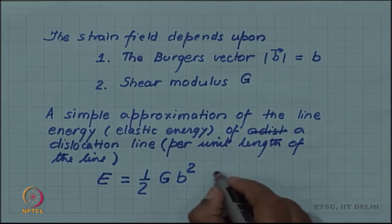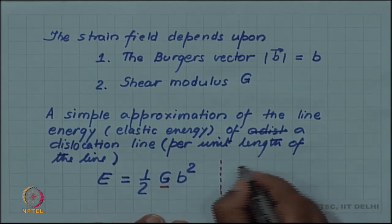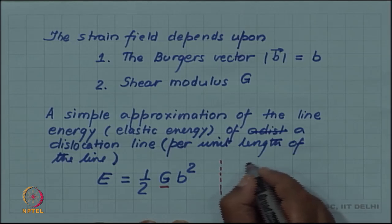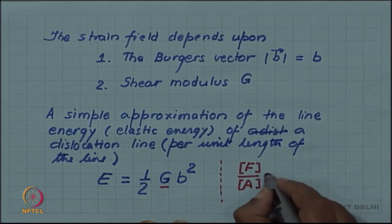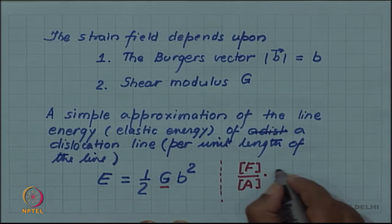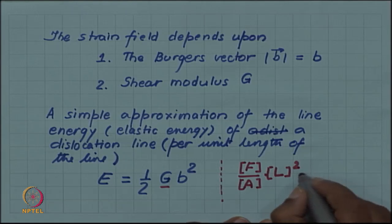You can see the dimensions - shear modulus will have the dimension force per unit area, and b square has the dimension square of L.